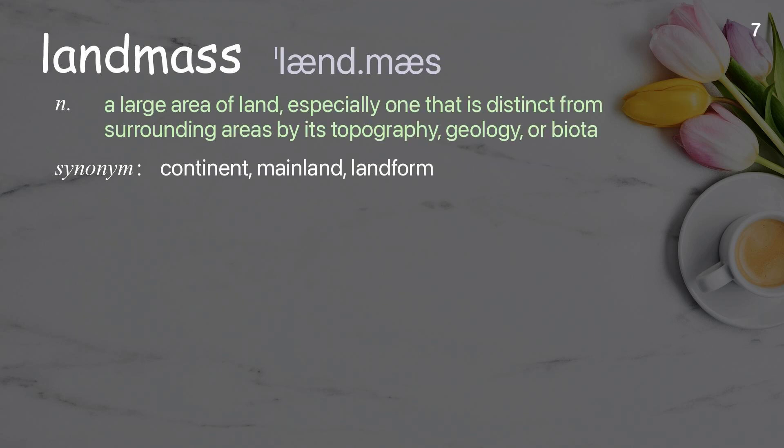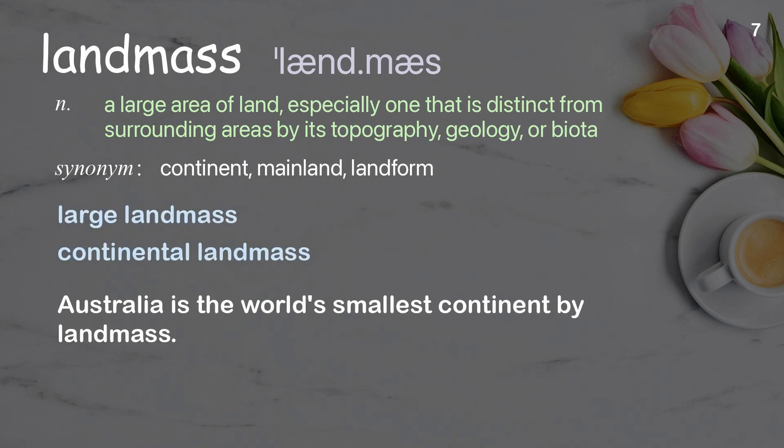Land mass: a large area of land, especially one that is distinct from surrounding areas by its topography, geology, or biota. Examples: large land mass; continental land mass. Australia is the world's smallest continent by land mass.